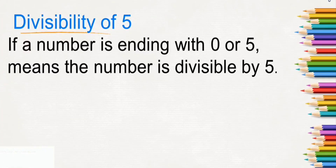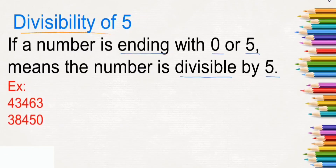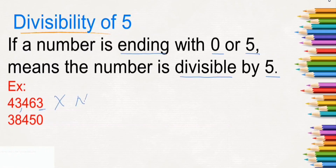Next, divisibility of 5. How do we check the divisibility of 5? If a number is ending with 0 or 5, the number is divisible by 5. Look at an example: 43,463. Here at the ones place, it is not 0 or 5, so this number cannot be divided by 5.